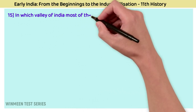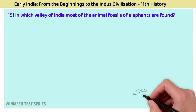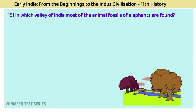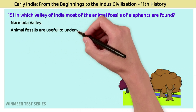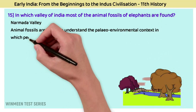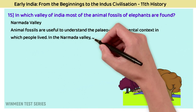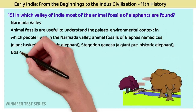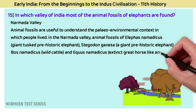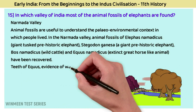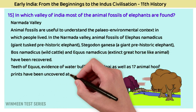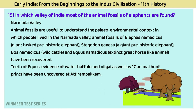Question 15: In which valley of India are most animal fossils of elephants found? The answer is the Narmada Valley. Animal fossils are useful for understanding the paleoenvironmental context. In the Narmada Valley, fossils of Elephas namadicus (a giant prehistoric elephant), Stegodon ganesa (another giant prehistoric elephant), Bos namadicus (wild cattle), and Equus namadicus (an extinct horse-like animal) have been recovered. Teeth of equids, evidence of water buffalo and nilgai, and 17 other animal hoof prints were uncovered at Attirambakkam.